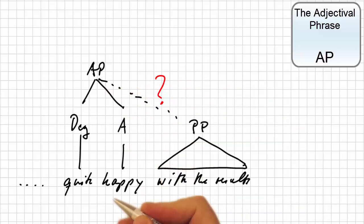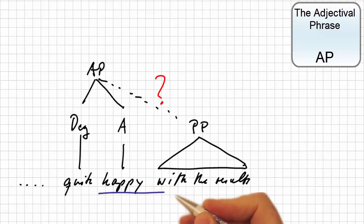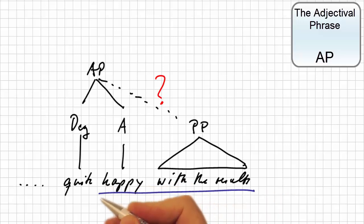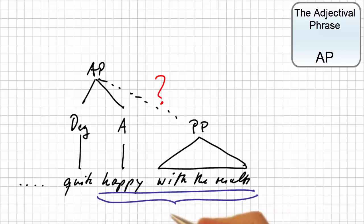Clearly, it must form a constituent with happy. Just apply the proform test. We can replace quite happy with the results by quite like it or quite so.